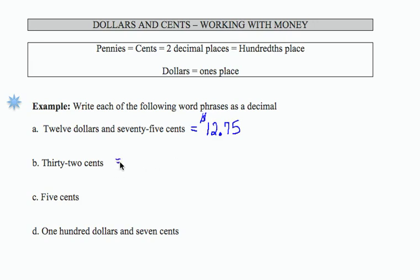Thirty-two cents would be zero, there's no dollars, and $0.32. And once again, let's go ahead and put that symbol there.